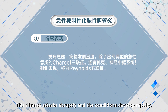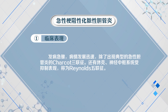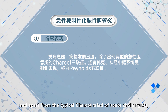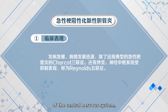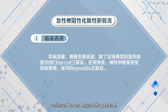These diseases attack abruptly and conditions develop rapidly. Apart from the typical Charcot's triad of acute cholangitis, the manifestations also include shock and inhibition of the central nervous system, referred to as Reynolds' pentad.